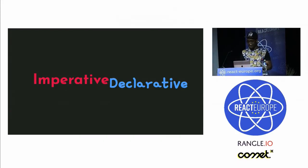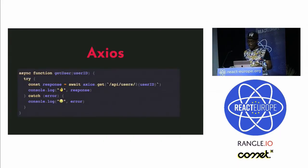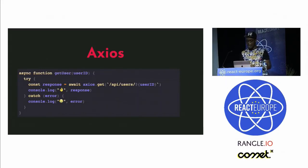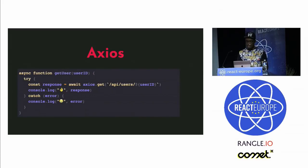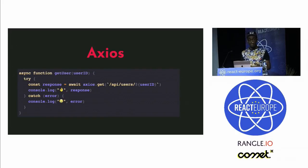If we take the first one, for instance, Axios — which you might already be familiar with — is probably the most commonly used solution for imperative data fetching. Basically you just use different functions and then tell your code how to get the data you want.